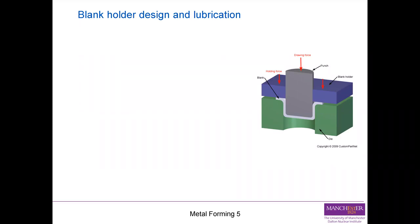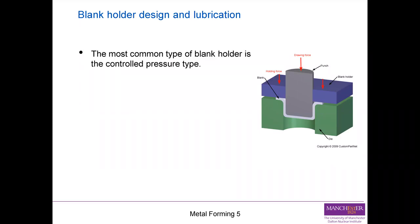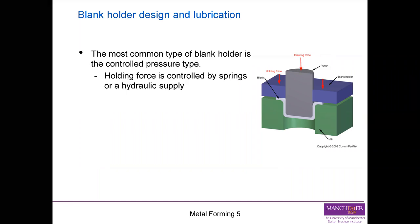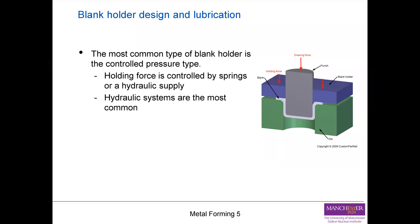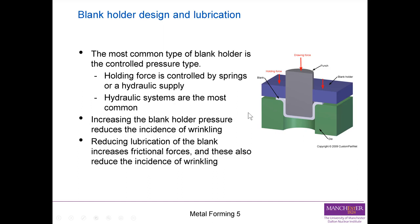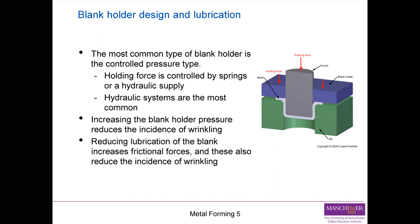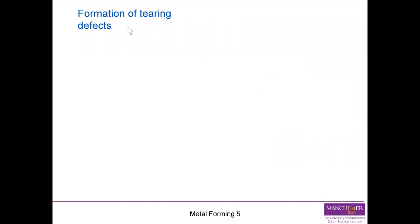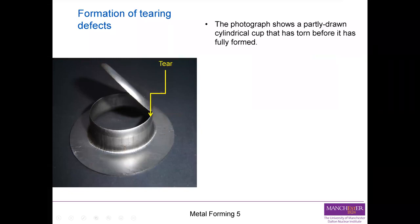A few bits of information about the types of blank holder: the most common type is the controlled pressure type, where the holding force is controlled by springs or a hydraulic supply. Hydraulic systems are the most common. Increasing the blank holder pressure reduces the incidence of wrinkling. Reducing lubrication of the blank increases frictional forces, which also reduces wrinkling.